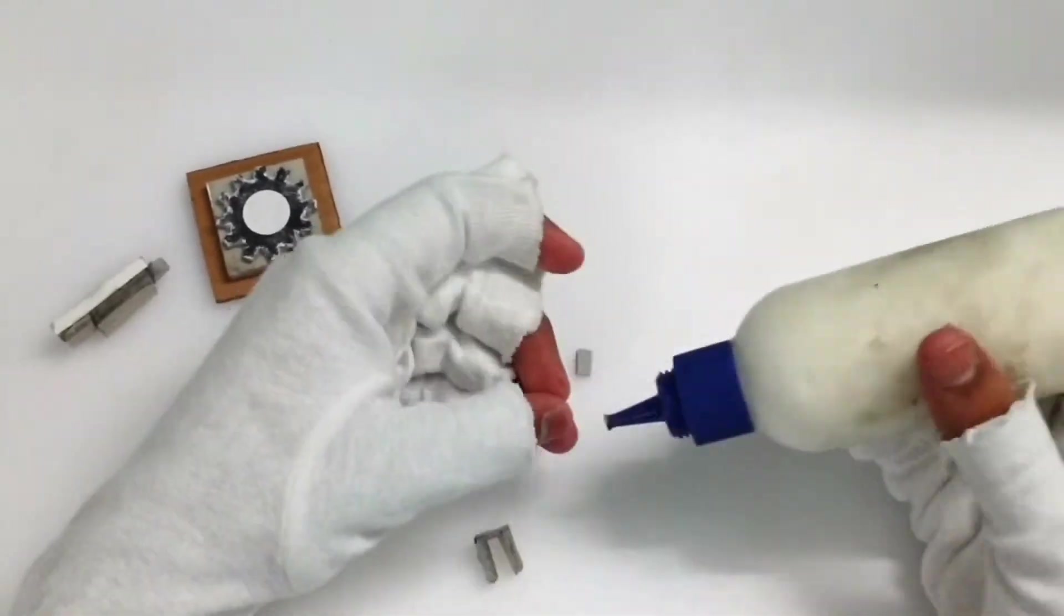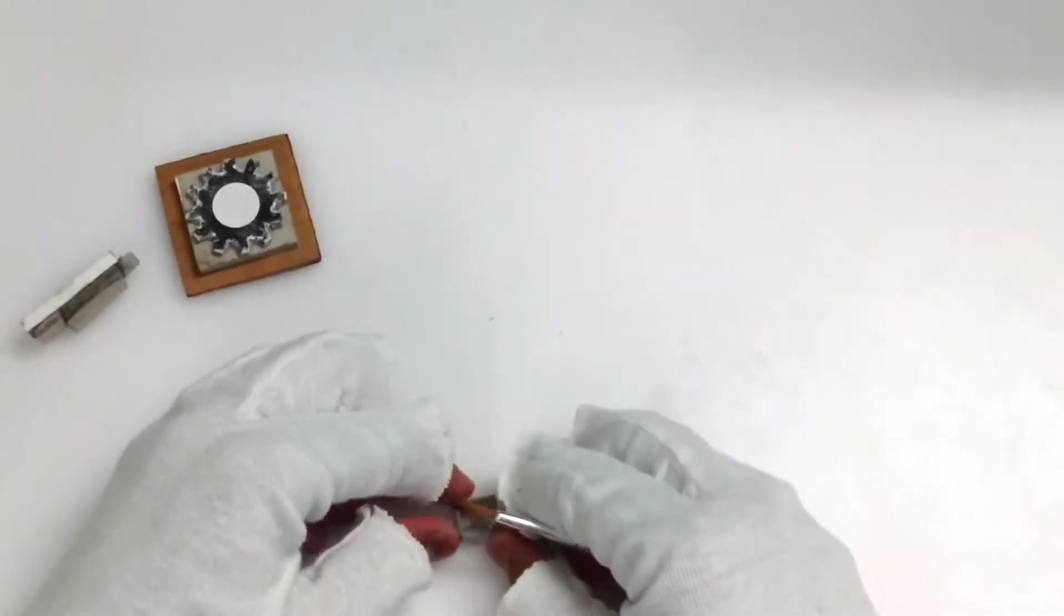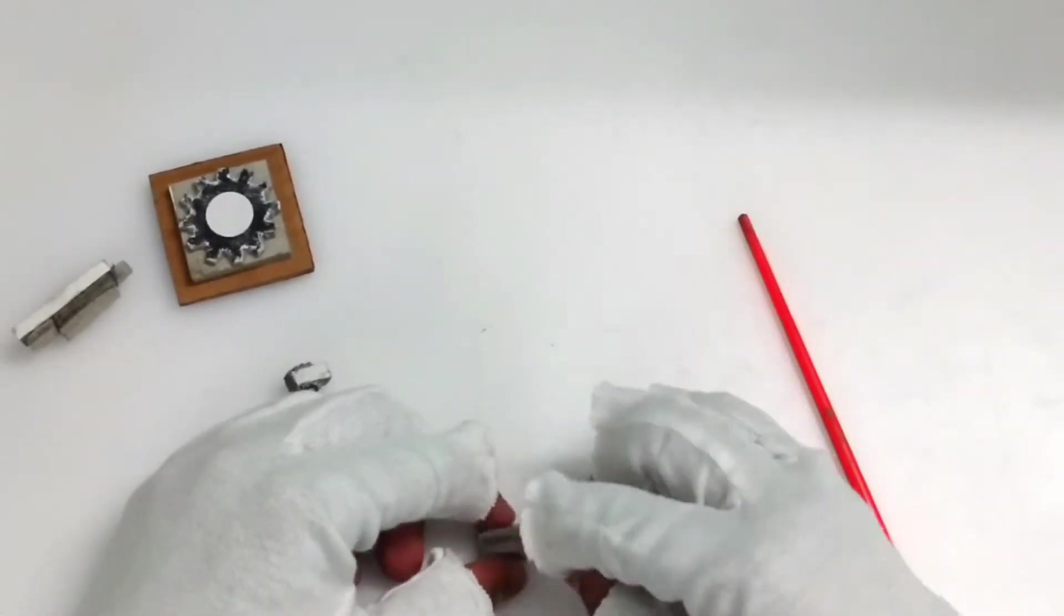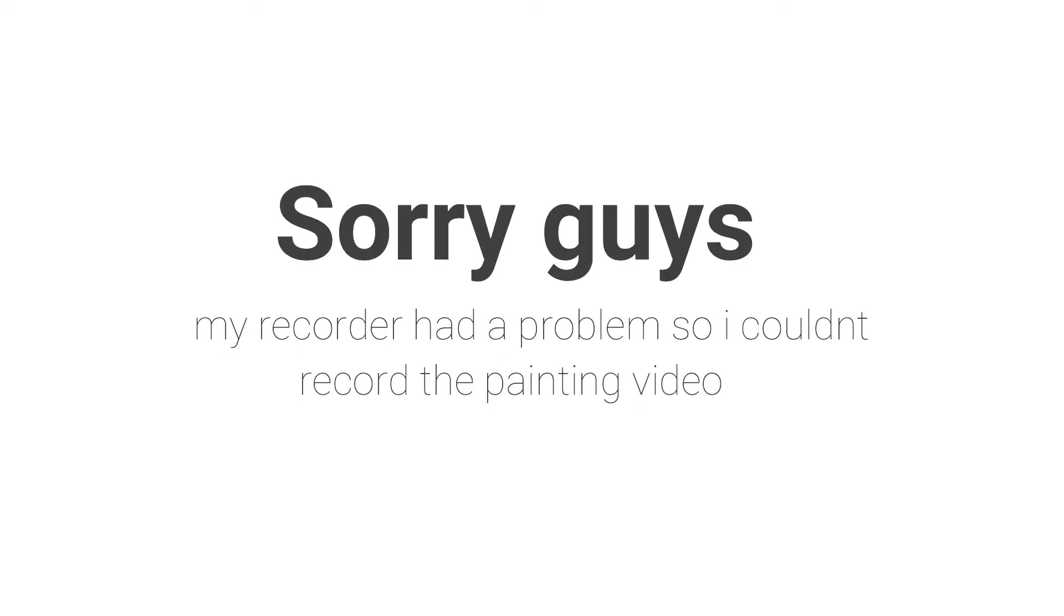...the back part of the expo that holds the ammo, that is the elixir in the expo, and stick it. It's done now. Now all three parts are done guys. And sorry, my recorder had a problem so I couldn't record the painting video.